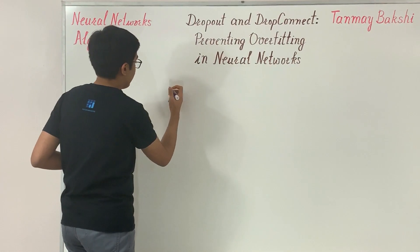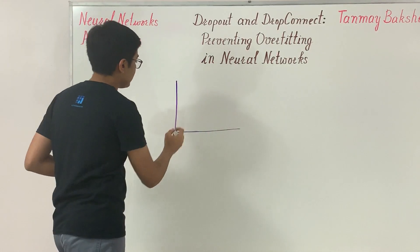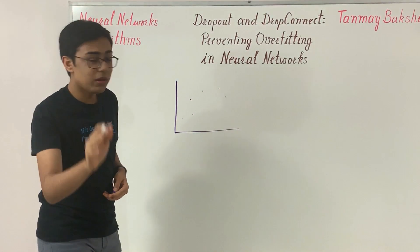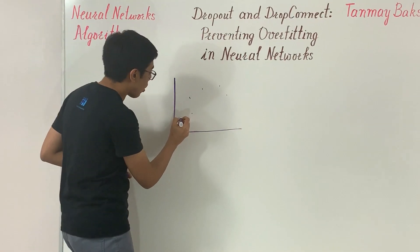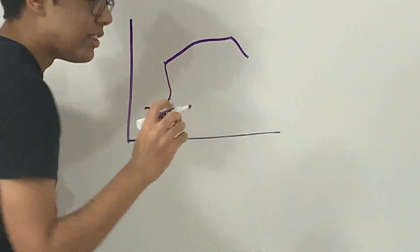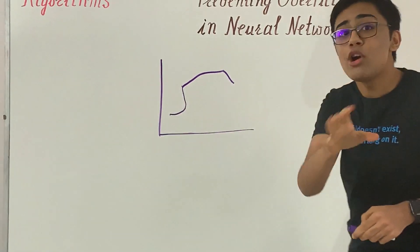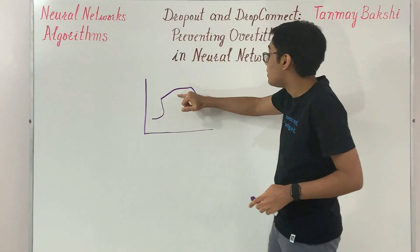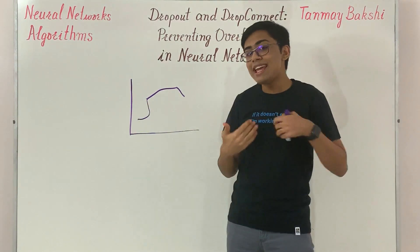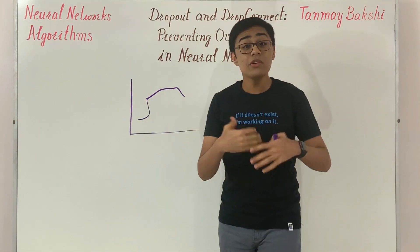This can happen if you have too many parameters in your neural network. For example, if you've got a graph of data with x and y axes and your neural network draws a line through each dot, it has essentially memorized the locations of every one of those dots rather than learning useful patterns.